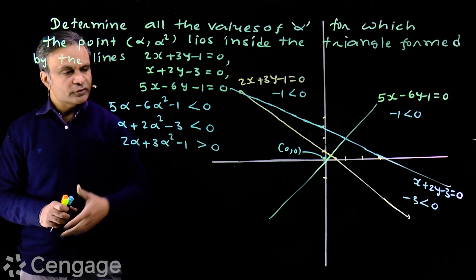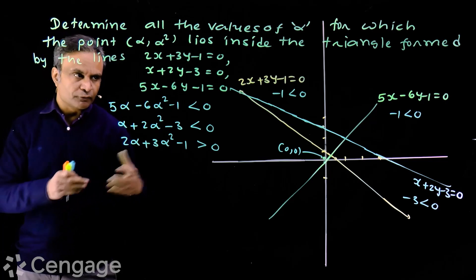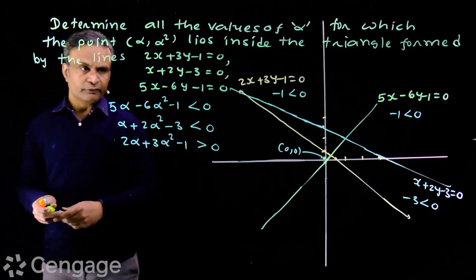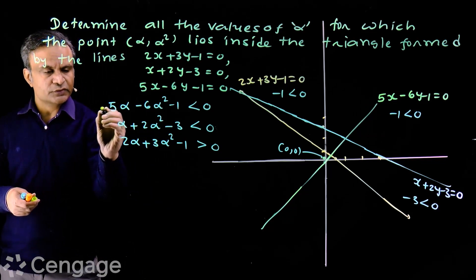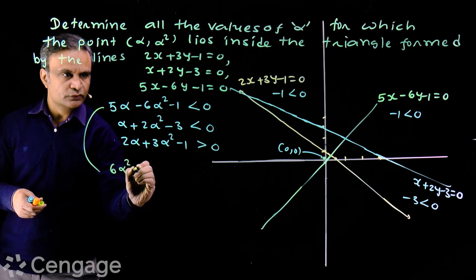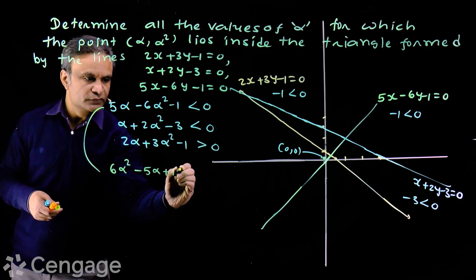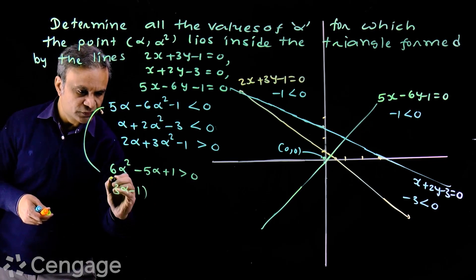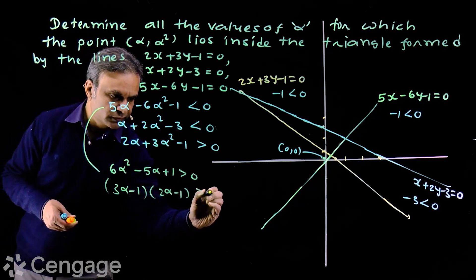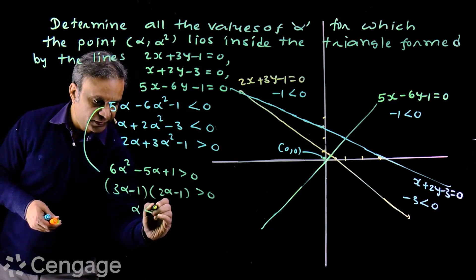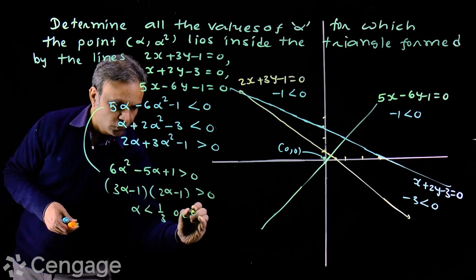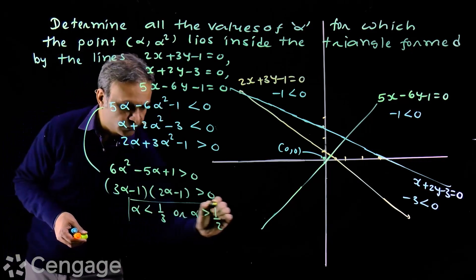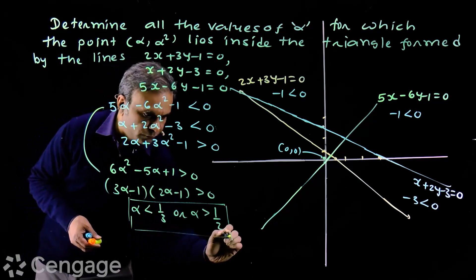We solve these three inequalities and find the common solution. Solving the first one: 6α² - 5α + 1 > 0 factors as (3α - 1)(2α - 1) > 0, giving us α < 1/3 or α > 1/2. This is the first set of values of alpha.